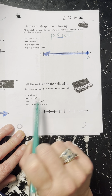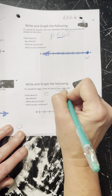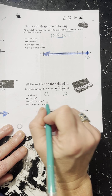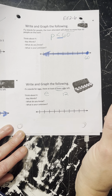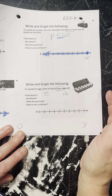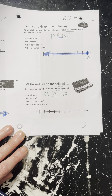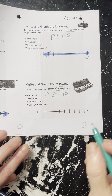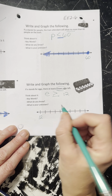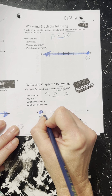If E stands for eggs, there are at least a dozen. E is eggs, and a dozen is 12. At least a dozen — I may have a dozen, I may have two dozen, but I have at least a dozen. So E is going to have to be greater than or equal to 12. I'll put my 12 right there and close it up with a closed dot shaded to the right.